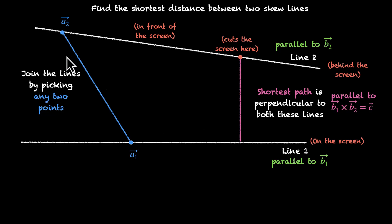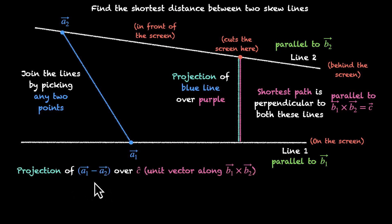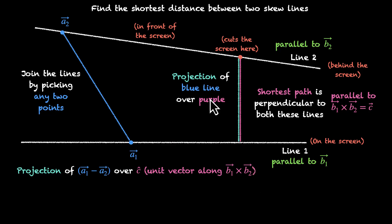Now this is where the magic is. We'll take the projection of the blue line segment (connecting our two chosen points) over the purple line (the shortest path direction, C). The projection of vector (A1 minus A2) onto the unit vector along C will give us the shortest distance. We know how to take projections — we need a unit vector along the purple direction, which we call C-hat, the unit vector along B1 cross B2.